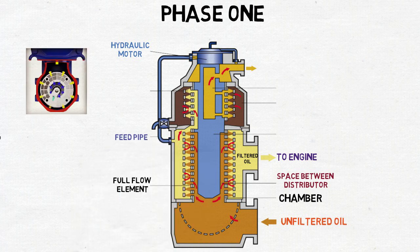This feed pipe drives the hydraulic motor. While the full flow filtration takes place in all columns except one, solids are removed in one column by back flushing using part of the filtered oil from the chamber.